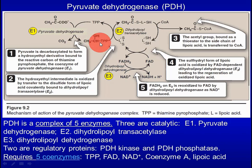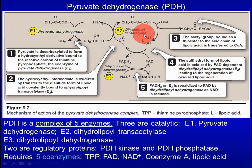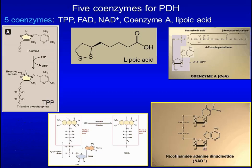The pyruvate dehydrogenase reaction proceeds in five steps. Step 1: pyruvate is decarboxylated to form a hydroxyethyl derivative bound to thiamine, the coenzyme of E1. Step 2: the hydroxyethyl intermediate is oxidized by transfer to the disulfide form of lipoic acid covalently bound to E2. Step 3: the acetyl group bound as a thioester to lipoic acid is transferred to coenzyme A. Step 4: the sulfhydryl form of lipoic acid is oxidized by E3 and lipoic acid is regenerated. Step 5: FADH2 is re-oxidized to FAD by E3 as NAD+ is reduced to NADH.